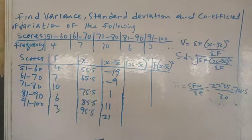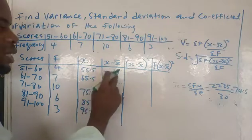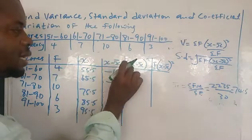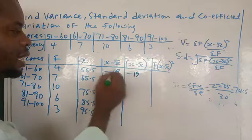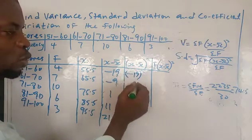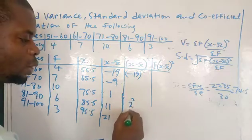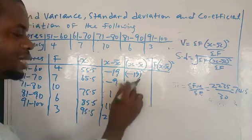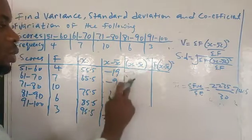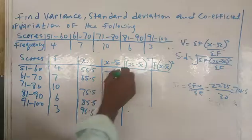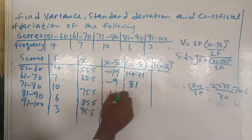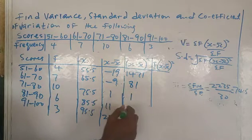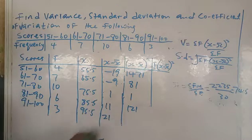Now for the (x minus mean) squared column, we square each of those answers. Squaring means multiplying the number by itself: minus 19 squared is minus 19 times minus 19, which gives 361. Minus 9 squared gives 81. 1 squared gives 1. 11 squared gives 121. 21 squared gives 441.